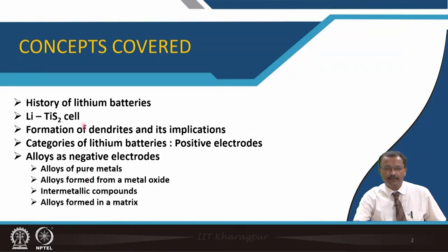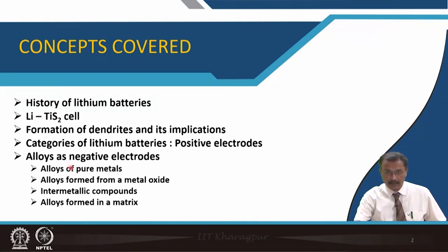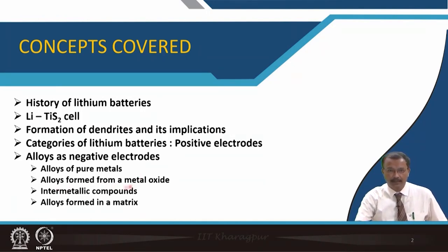We will talk about various types of lithium ion batteries — what are the positive electrodes used and what are the negative electrodes. Apart from carbonaceous graphite or MCMB, there are other materials people are working on, such as alloys of pure metals, or in some cases semiconducting silicon, or other metals used in the form of metal alloys. Then alloys formed from a metal oxide will also be introduced, along with intermetallic compounds and alloys formed in a matrix. These are the important materials we will cover in this lecture.